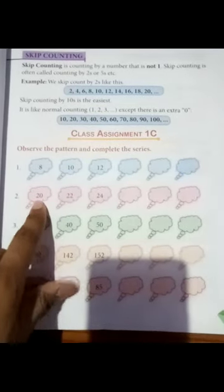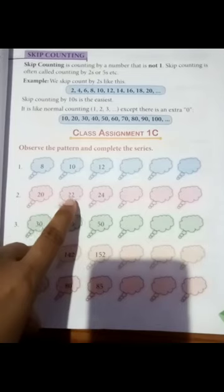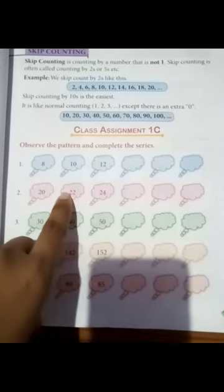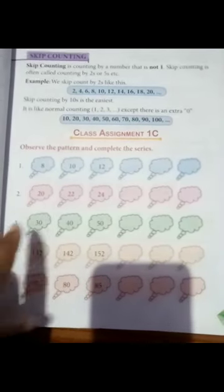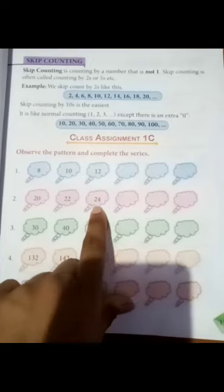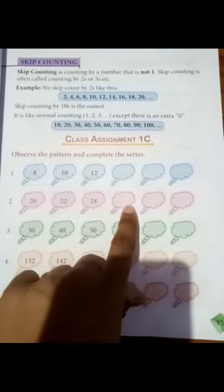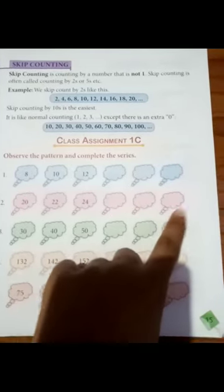Second question: 20, 22, 24. Second term minus first term, 22 minus 20 is equal to 2. Then add 24 plus 2 is 26, 28, 30.